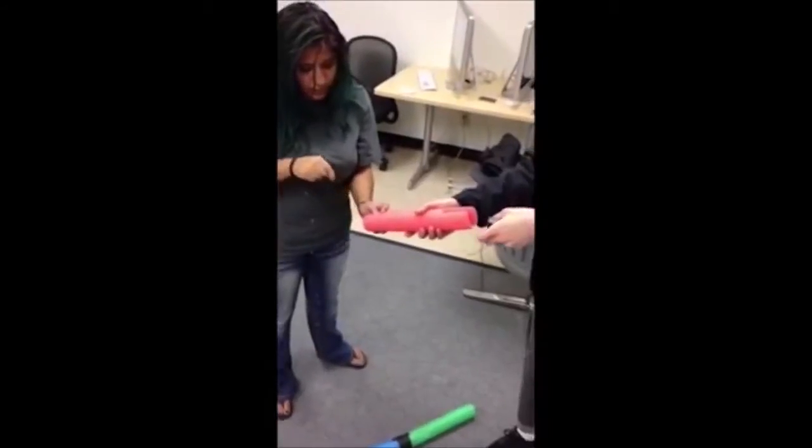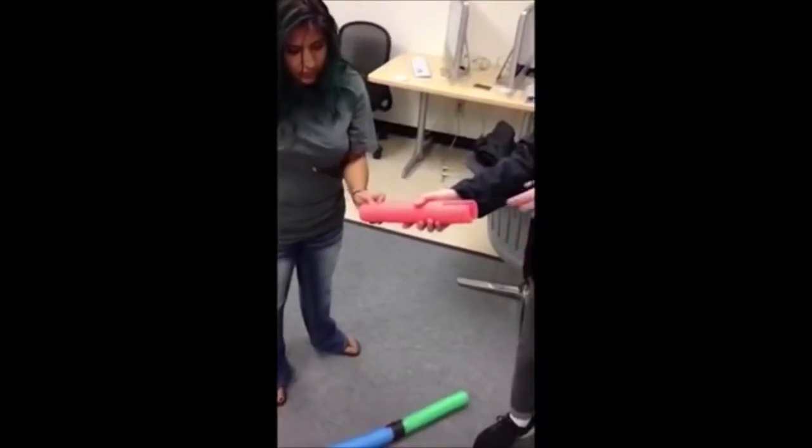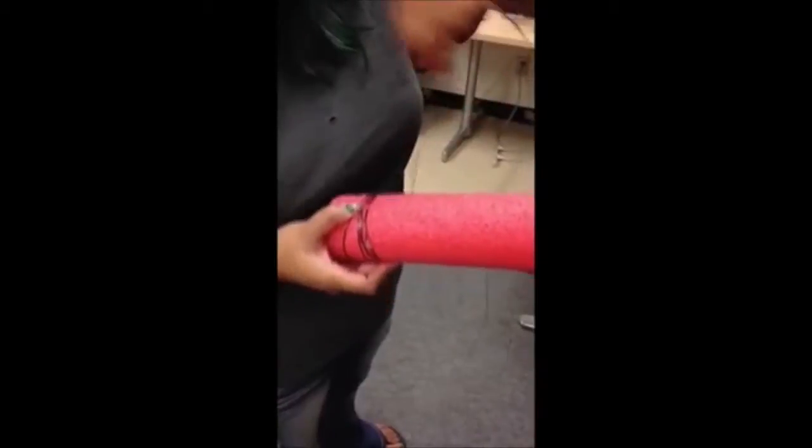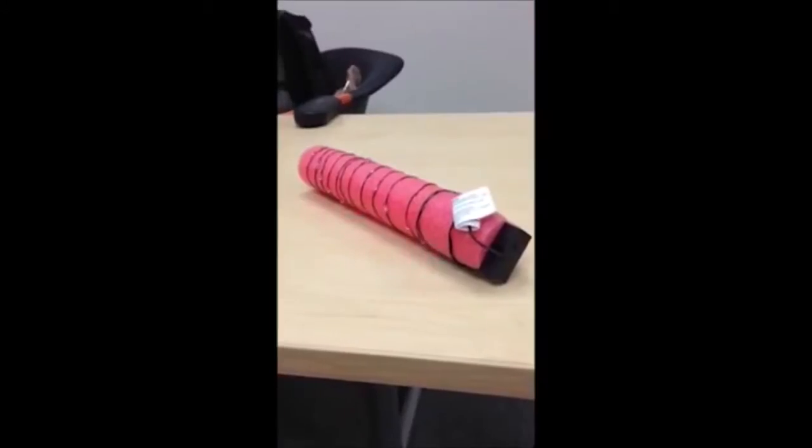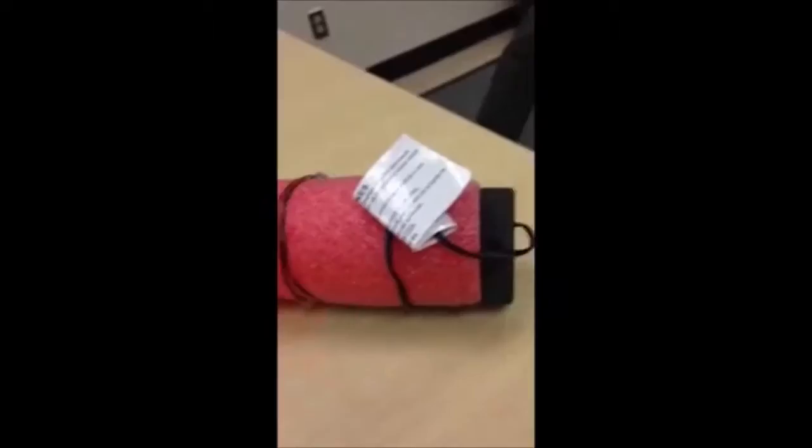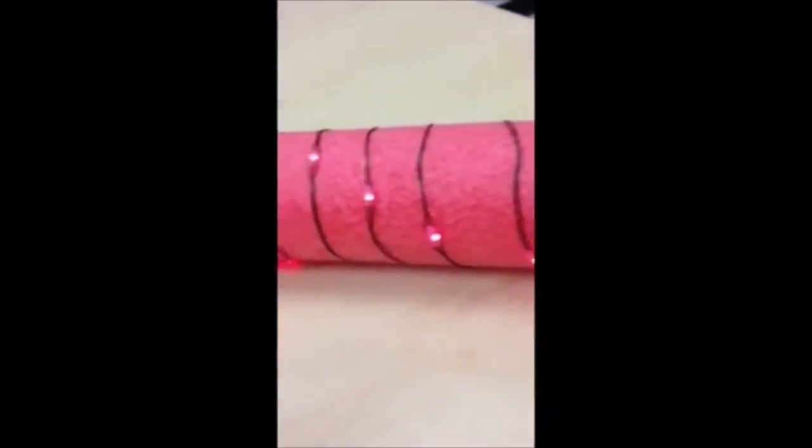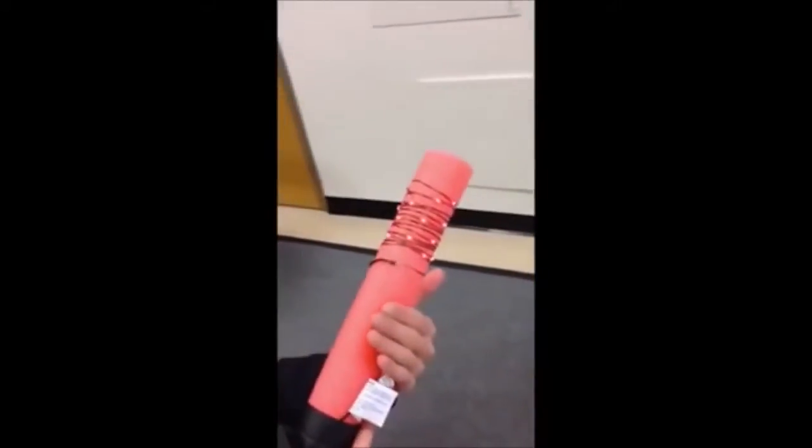The string lights will be fed through the pool noodle and wrapped around. This will provide for 360 coverage of light.